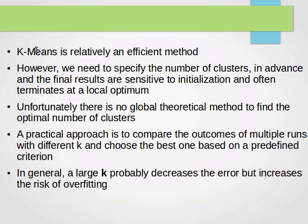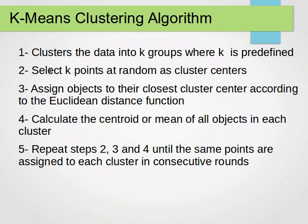Now, the k-means clustering algorithm is a relatively efficient method, but we need to specify the number of clusters in advance and the final results are sensitive to initialization and often terminate at a local optimum. So the random choice of k in step two here is essential.